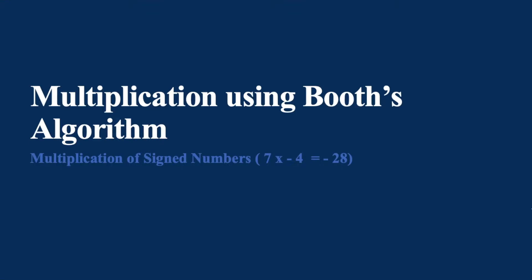In this video, we will be using Booth algorithm to multiply two different numbers where the multiplicand is a positive unsigned number and the multiplier is a signed number which is minus 4. We will try to multiply 7 with minus 4 and check using Booth algorithm whether we get minus 28 or not. This example is taken under multiplication of signed numbers where only one number is used as a signed number.